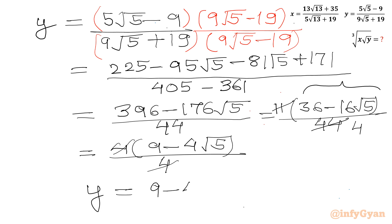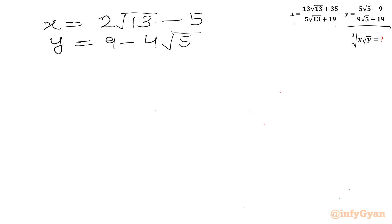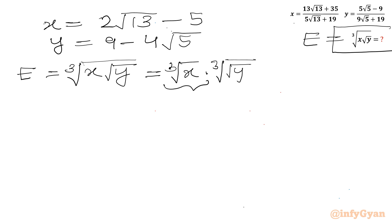Now we have the simplified forms: x = 2√13 − 5 and y = 9 − 4√5. Now we have to calculate the expression. Let us say this is expression e. So I will write e equal to cube root of x times square root of y. Further I can write it as ∛x times ∛(√y). Now I will say this is a and this is b.